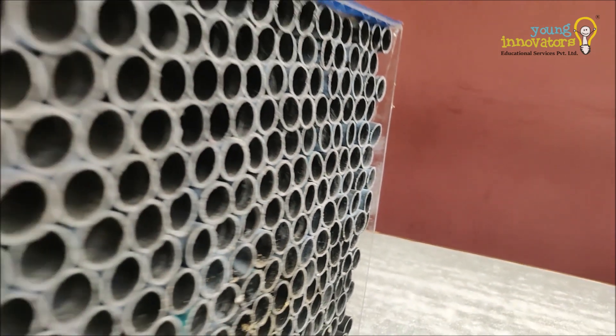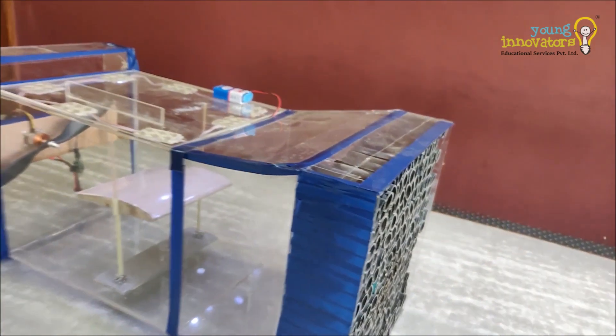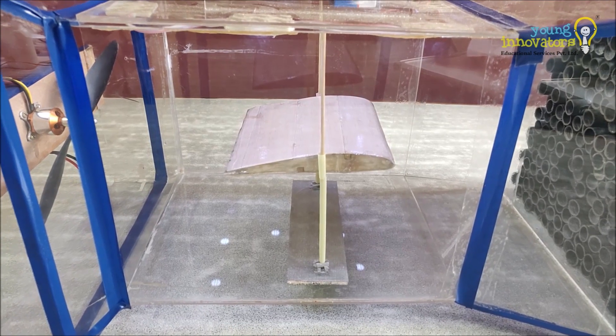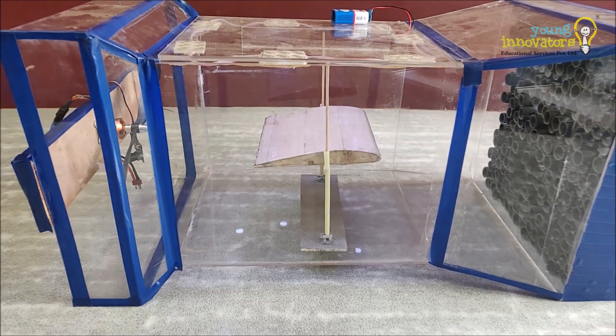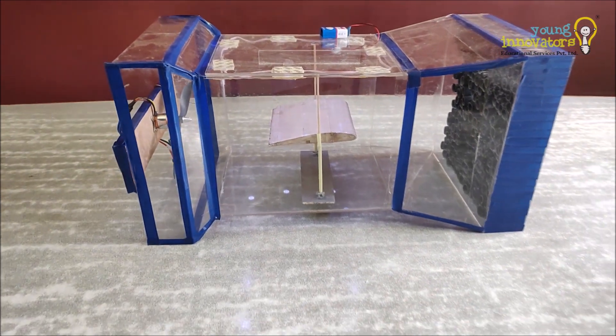In the settling chamber, we have flow straighteners through which the air passes before entering the wind tunnel. Later, we have test section, then diffuser which minimizes the losses in the wind tunnel.